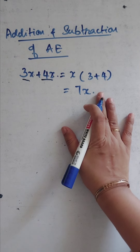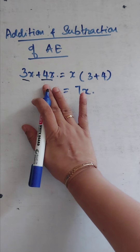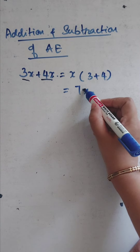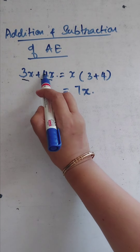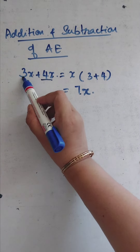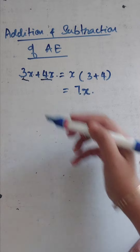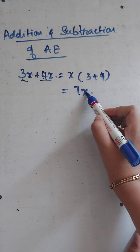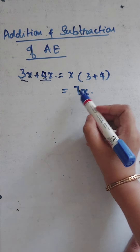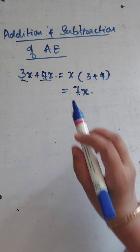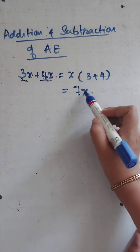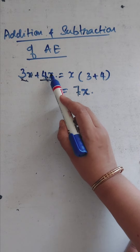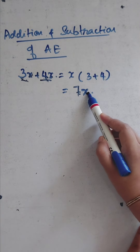From this we can see that if two like terms are to be added, we just keep the variable and add the two coefficients. The coefficient of the result will be the sum of the coefficients of the two terms. So when you add two like terms, the answer will also be a like term — here the variable x remains x throughout.